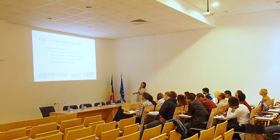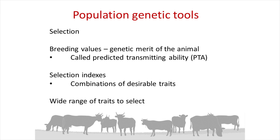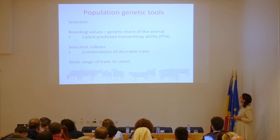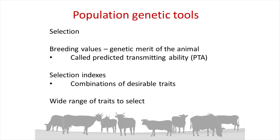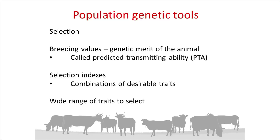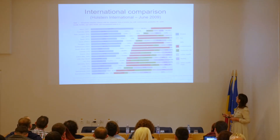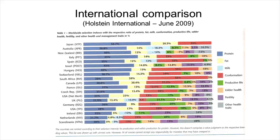Moving on to section two, I'm going to fairly briefly look at genetic tools to improve fertility — something which will be picked up later by colleagues tomorrow. In terms of population genetic tools, we select bulls used for artificial insemination and assign them breeding values called predicted transmitting ability for different genetic traits. You can select for a single trait, but more commonly we combine them into selection indices with a combination of desirable traits.